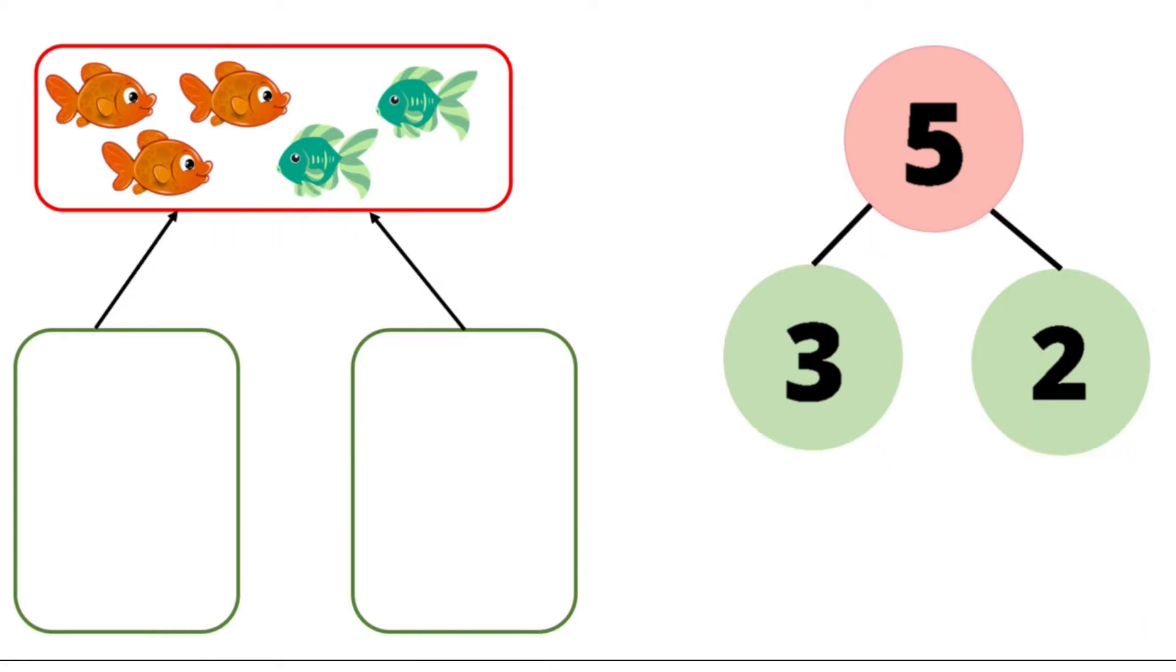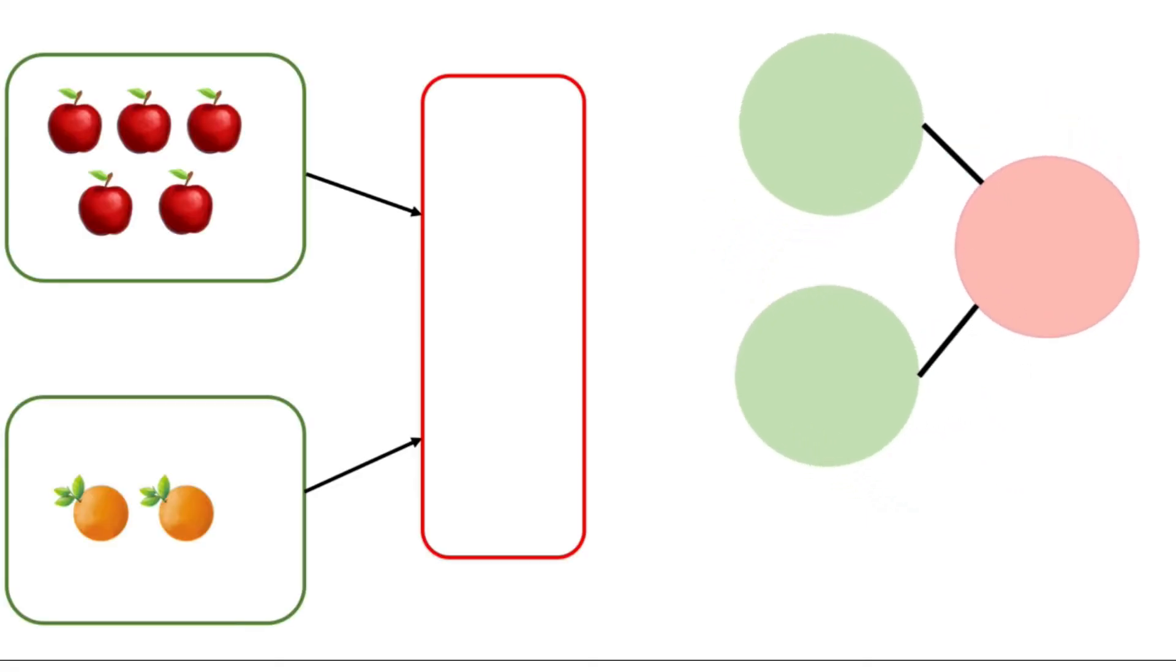Try another example. How do we fill in the number bonds? That's right. Five apples, two oranges. If we put them together.